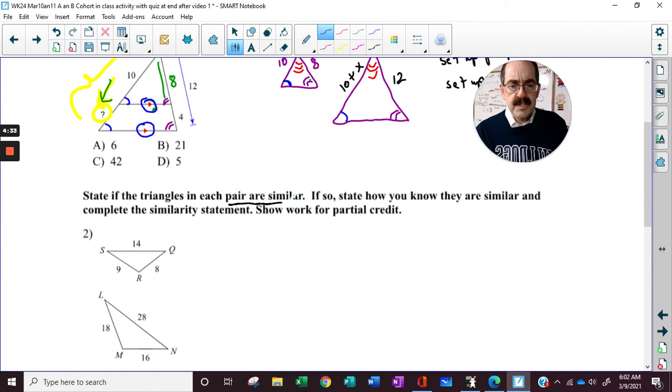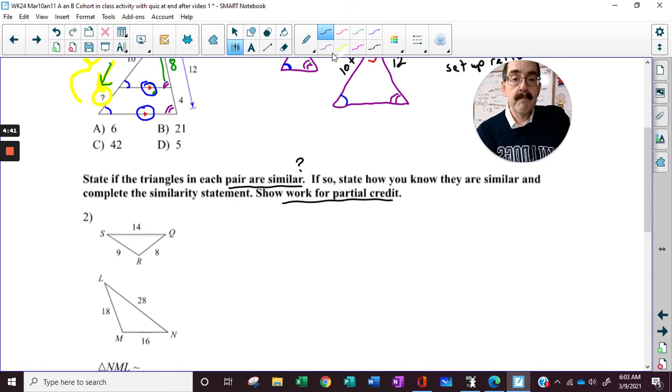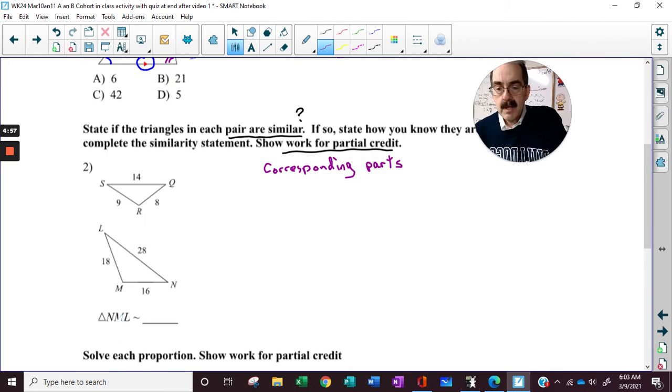Now, state if the triangles are similar. If so, state how they're similar and complete the similarity statement. Show your work for partial credit. Well, remember in class we wanted to find the corresponding parts. We want to find the corresponding parts. So it's your job to figure out what goes to what. N, M, L. So you've got to use N, M, L to create a similarity statement.